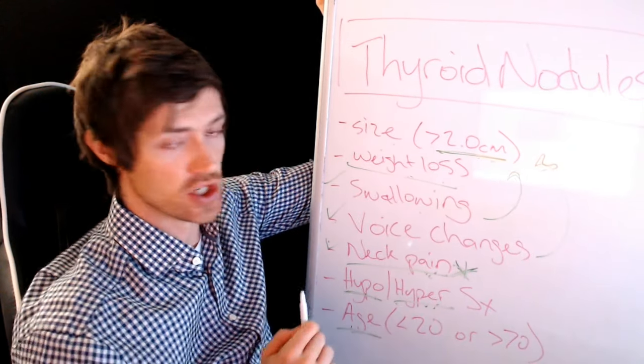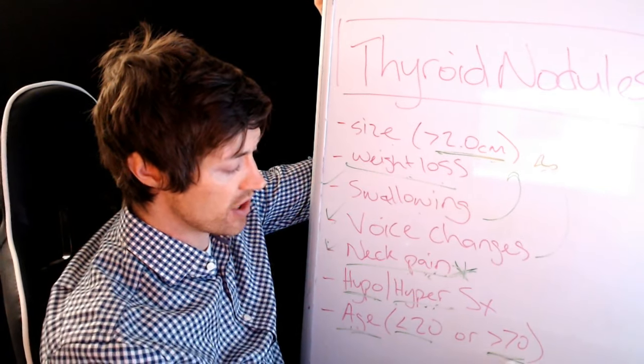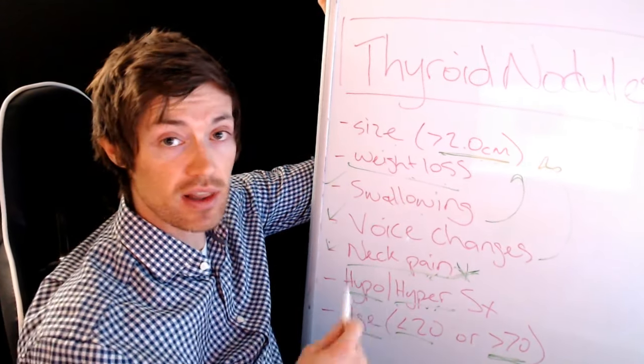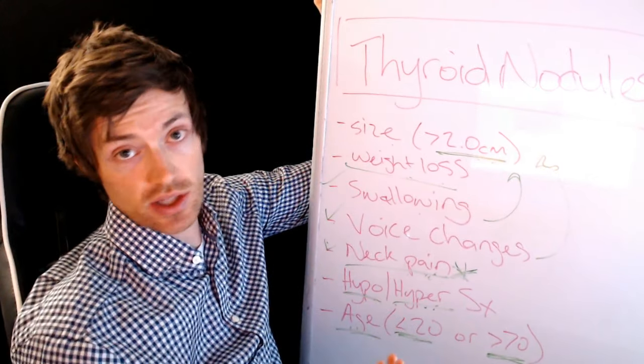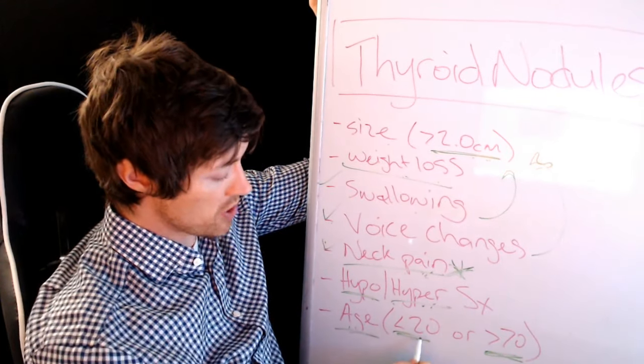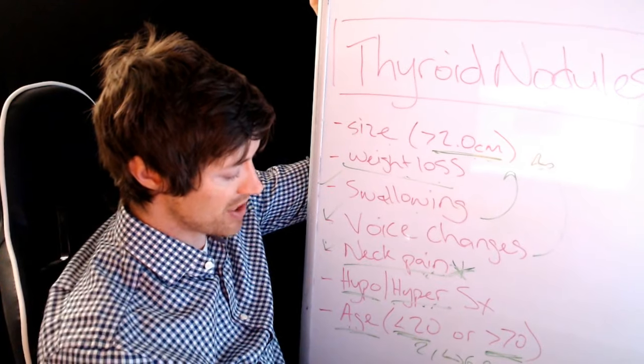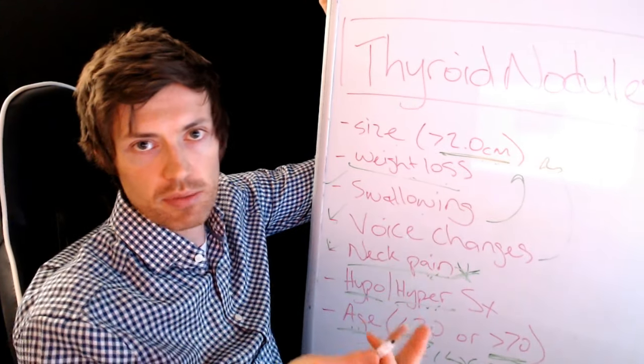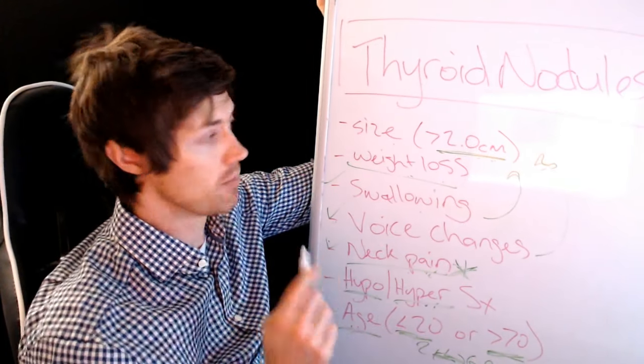Another thing would be age. So if you are less than 20 or greater than 70, then it's more likely that your nodule is going to be worrisome. So you shouldn't really see a nodule if you're less than 20. So if you're 18 or 19, you got a big nodule, that's probably an issue. If you're anywhere between 21 and 69, then that's pretty much the age that we just find them all in people randomly all the time. So it's not really a big deal if you're in between this age, but the older you are, the younger you are, it can be an issue.